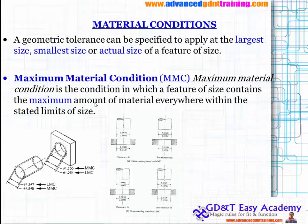Now we will look at the material conditions — a geometric tolerance which you need to specify for maintaining the largest size, smallest size, or actual size of the feature. If you are talking about the actual size, that refers to the RFS condition, which I will talk about later. So let us start with the MMC.